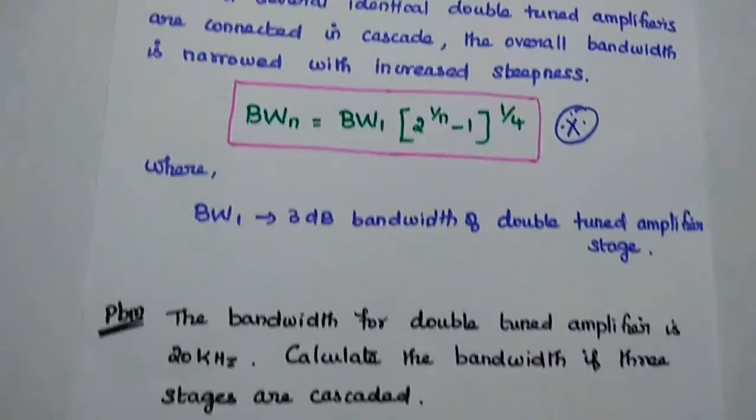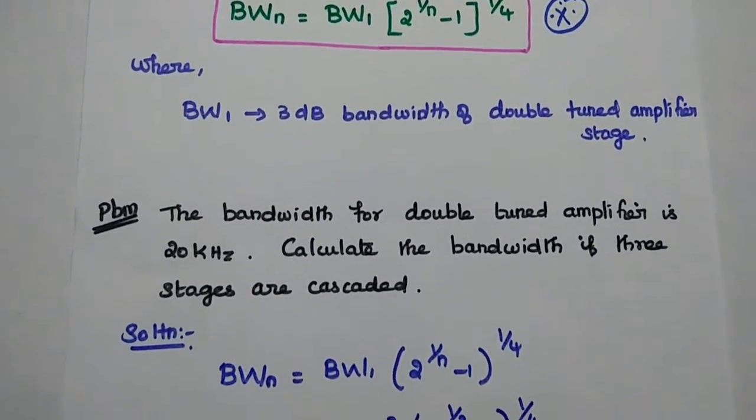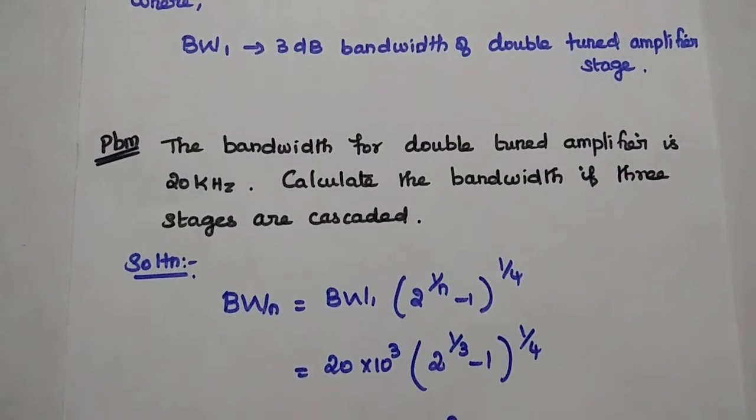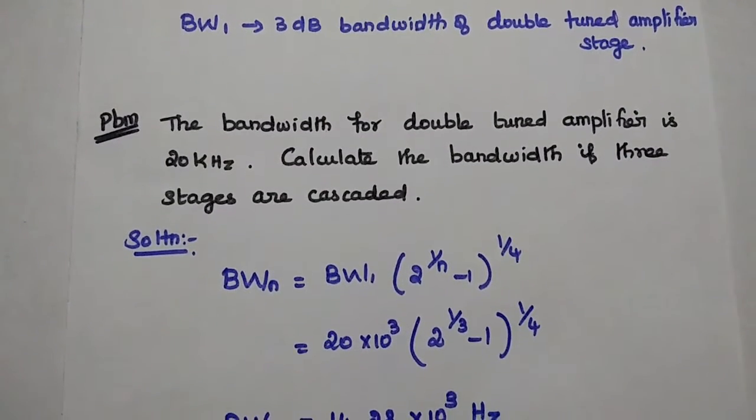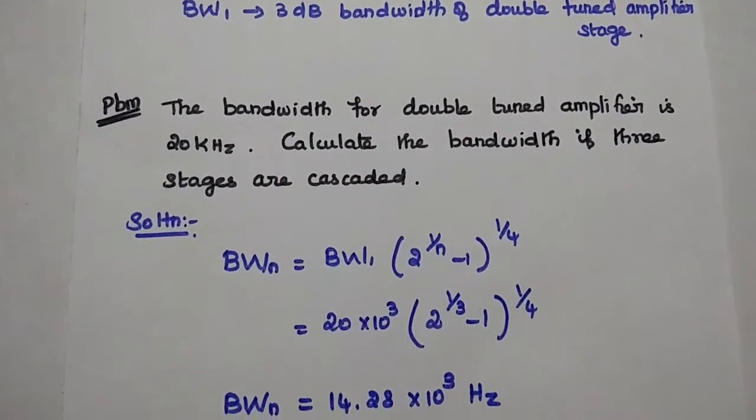So next we are going to solve one problem in this. The bandwidth for double tuned amplifier is 20 kilohertz. Calculate the bandwidth if 3 stages are cascaded.